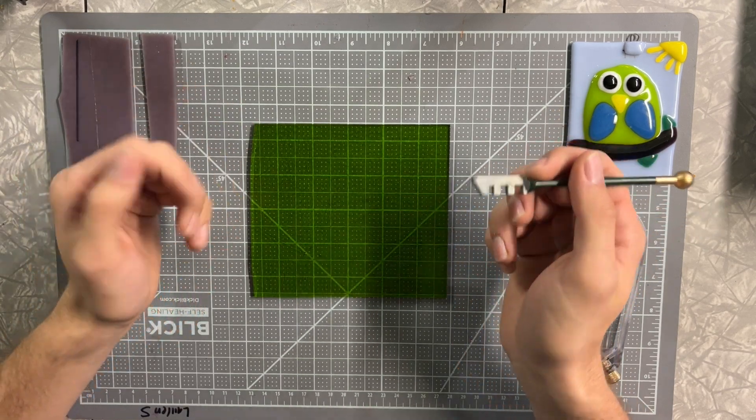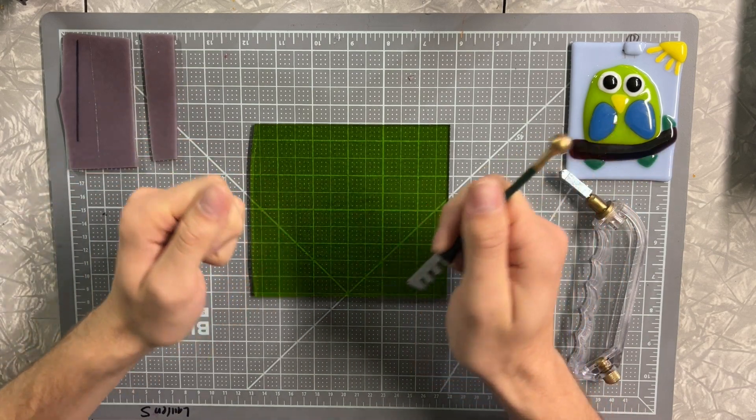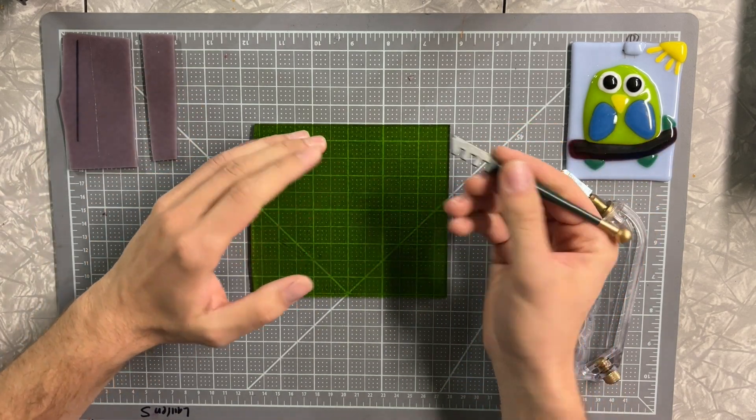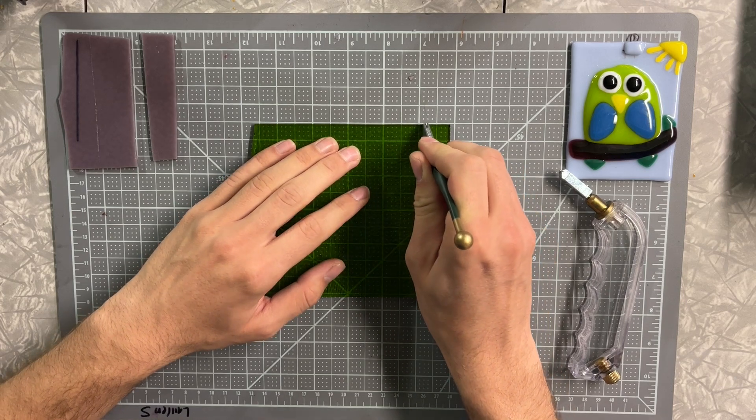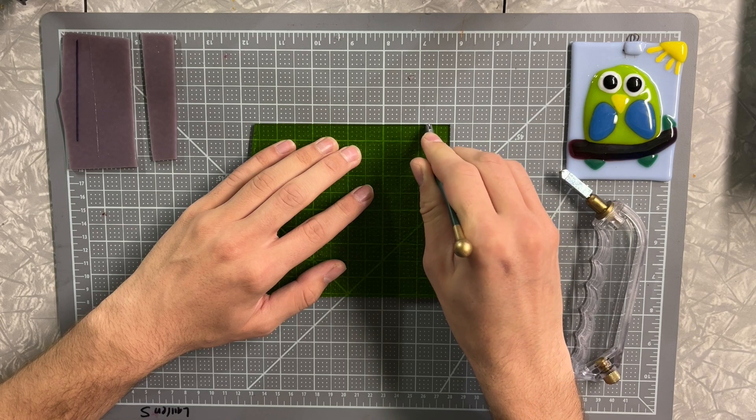I want you to listen for a specific sound while I'm making the score line. You know it's scoring properly when you hear this sound. It sounds to me kind of like Velcro being torn apart slowly. So I'll go ahead and put some pressure on the glass starting at the edge and just drag back.